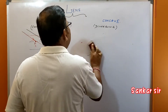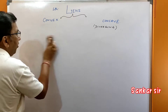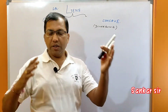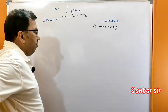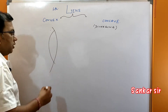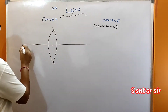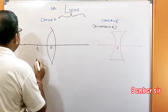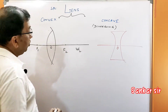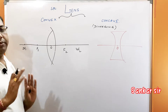Now, how is the image formed in case of a lens — concave or convex? Same thing, just as a mirror. What we see for convex mirror and concave mirror regarding image formation, same thing applies here. This is the convex lens, this is the optical centre, this is the principal axis. On one side we have 2f1 and f1, and on the other side f2 and 2f2.